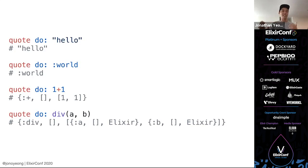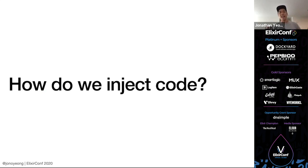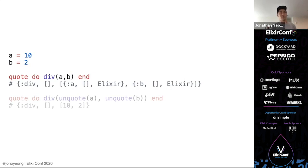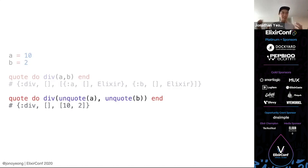But how do we actually change that, and how do we inject code? That's where unquoting comes in. We have two variables, a equals 10, b equals 2. We want to use the div(a, b) example — if we just quote div(a, b), we don't get what I'd expect. I would expect the div to now have 10 and 2 inside the quoted expression, but it doesn't. Unquoting is like string interpolation — we can inject the values of a and b into our quoted expression, and the resulting expression contains our 10 and 2.